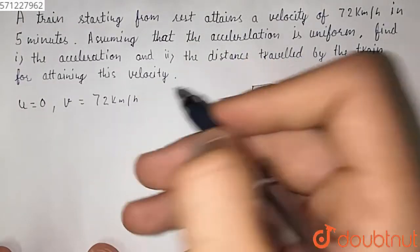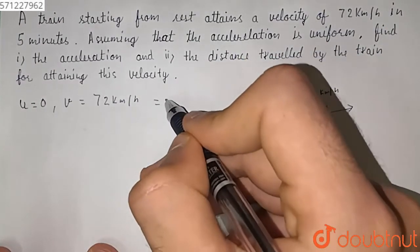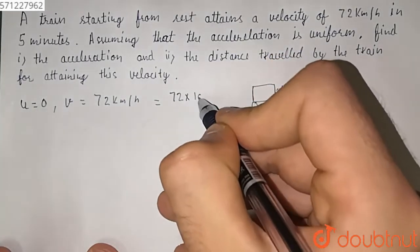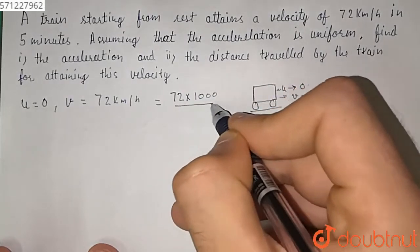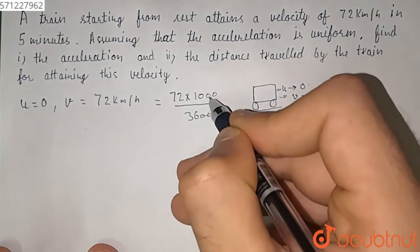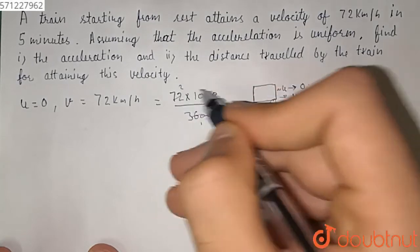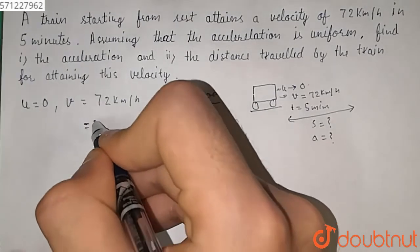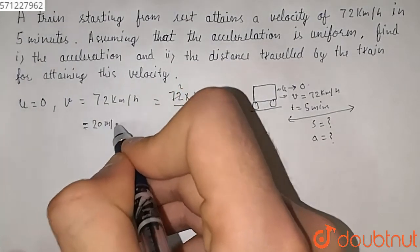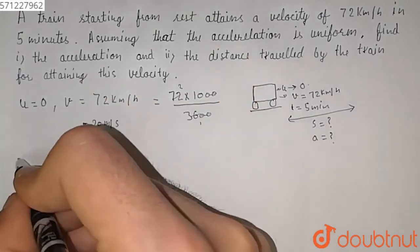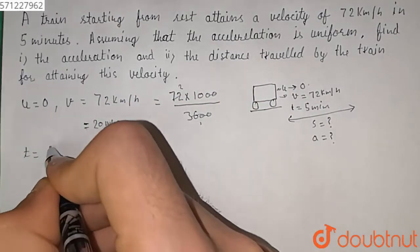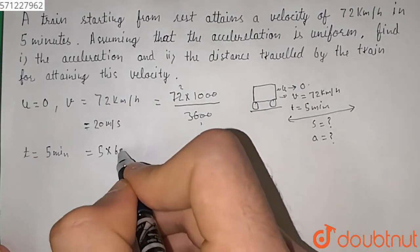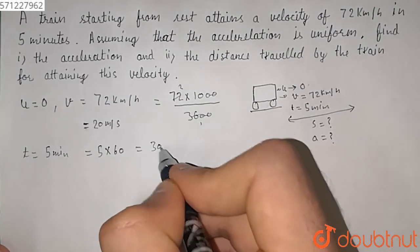So 72 km per hour — we have to convert it into m per second, which is equal to 72 × 1000 over 3600, which is equal to 20 meter per second. And the time period given to us is equal to 5 minutes, so 5 × 60 which is 300 seconds.